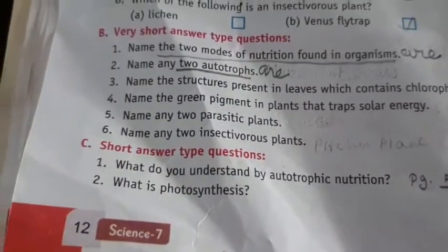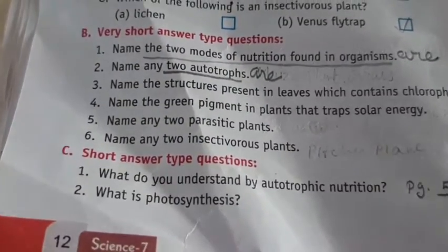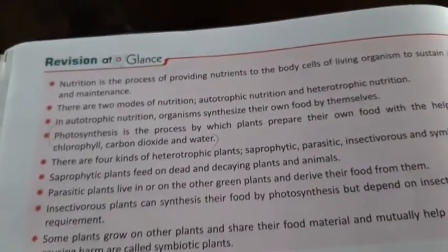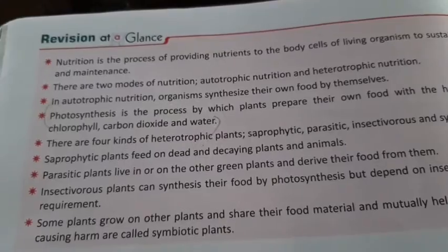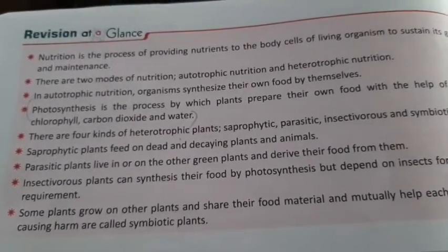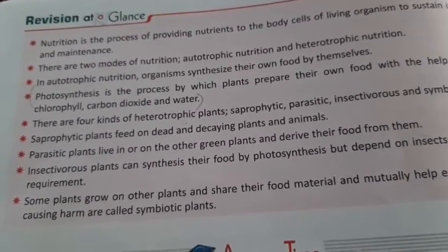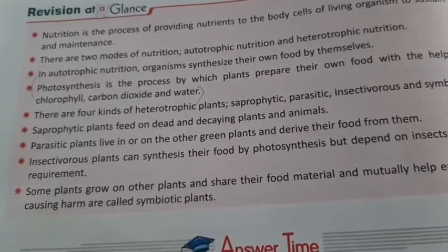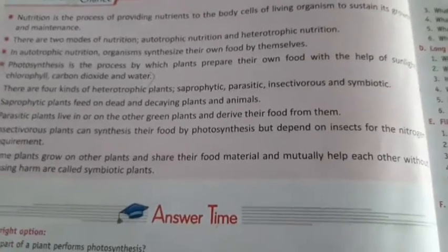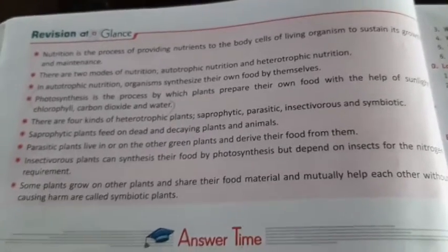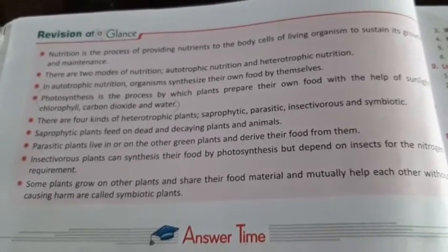Question 2: What is photosynthesis? On the same page, answer 4 is marked: Photosynthesis is the process by which plants prepare their own food with the help of sunlight, chlorophyll, carbon dioxide, and water. Write answer 2 from that point as marked.